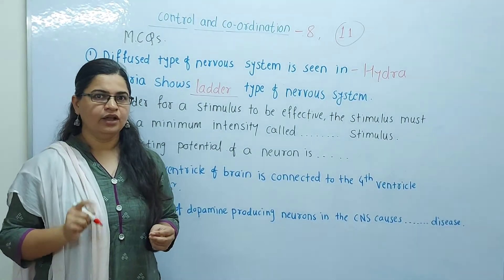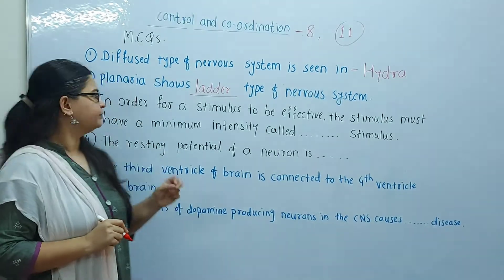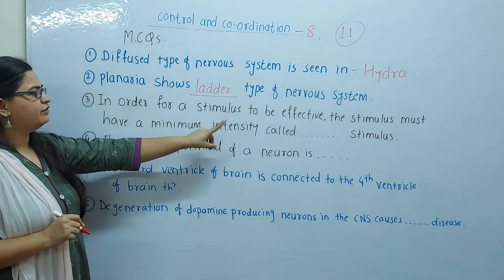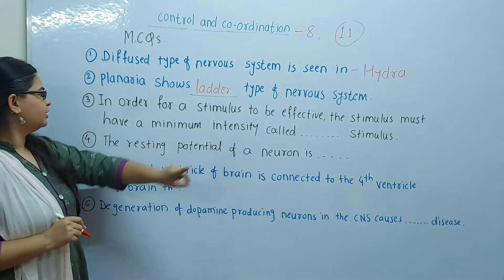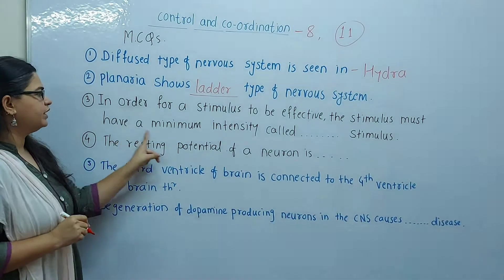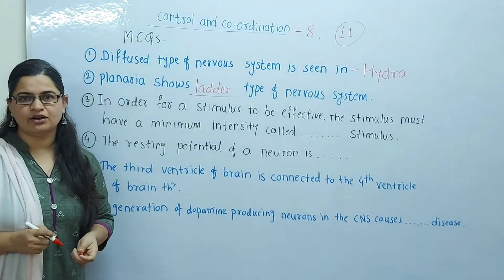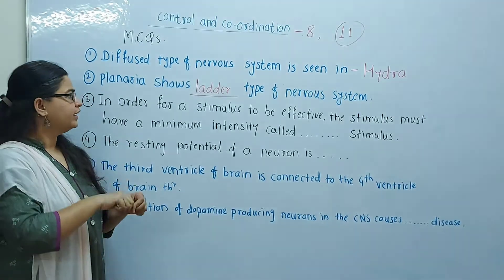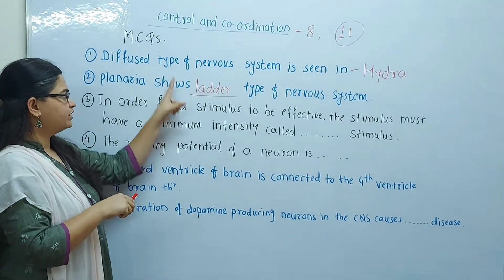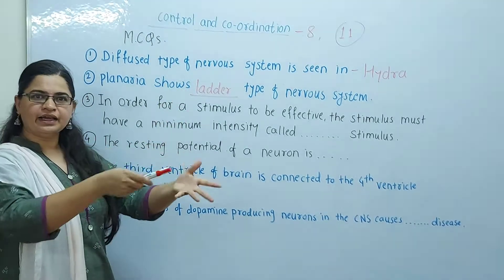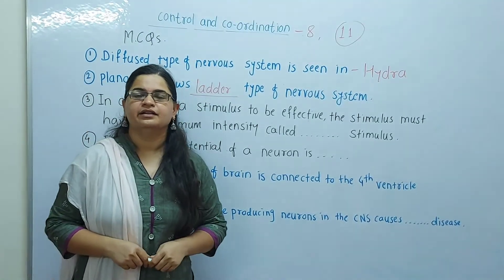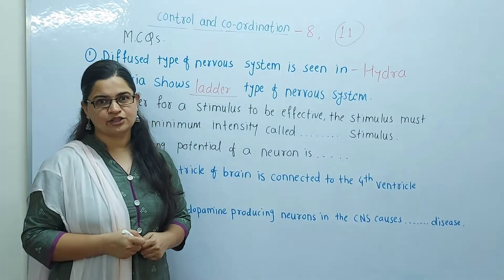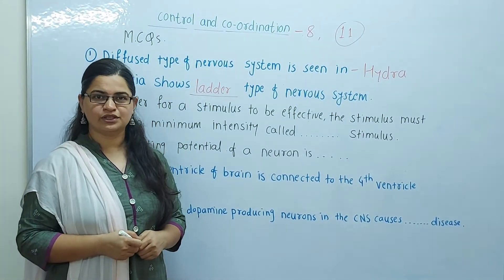Now we will discuss the third question. In order for a stimulus to be effective, the stimulus must have a minimum intensity called a blank stimulus. This should be the threshold. The answer is threshold stimulus — threshold stimulus must be necessary.